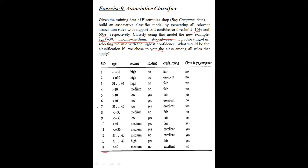The problem asks us to predict the class of this new query point using the highest confidence method, and also using the voting method. Both methods are to be used. The training dataset has 14 records with age, income, student, and credit rating as input parameters, and the class label is buy-computer. All values are categorical — nominal values. Age has three categories: less than or equal to 30, 31 to 40, and greater than 40. Income has three categories: high, medium, and low. Student has two categories: yes and no. Credit rating has two categories: fair and excellent. The class label also has two categories: yes and no — this is binary class classification.